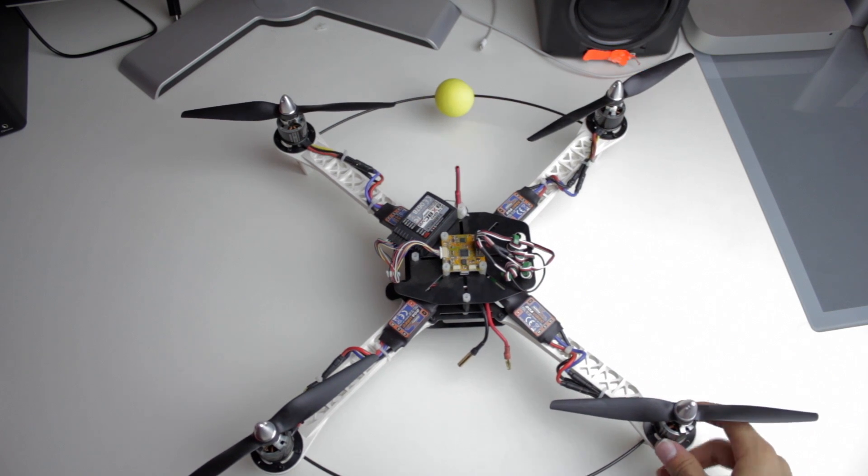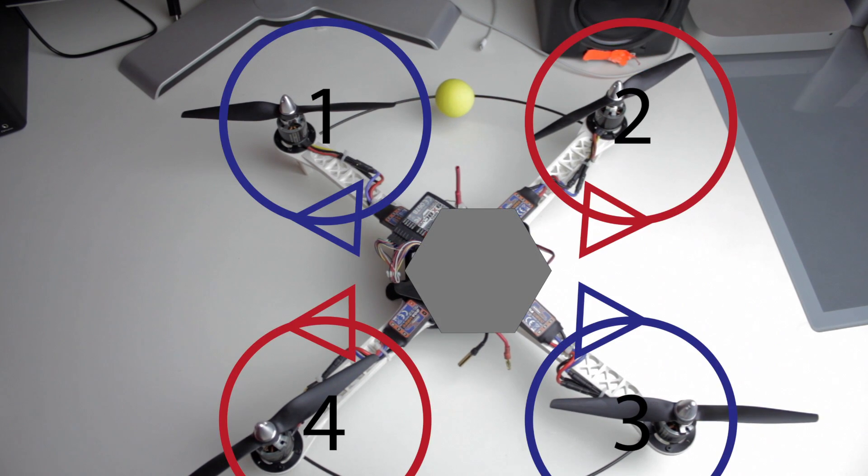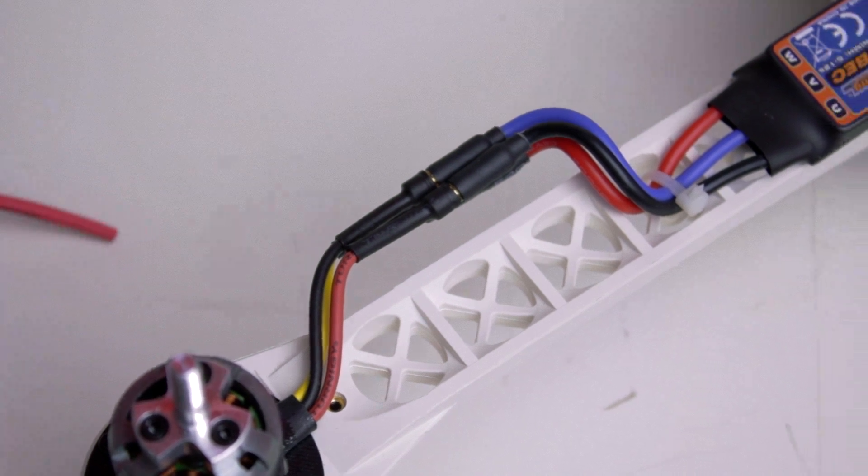If you've plugged in your ESCs to your flight controller properly and your motors are still not spinning in the right direction, all you have to do is reverse any of the three motor wires.